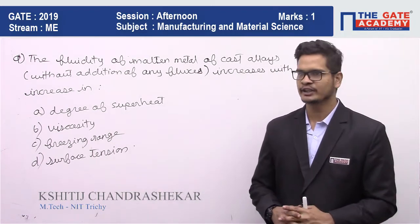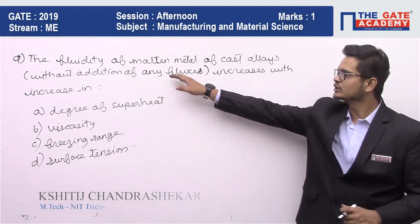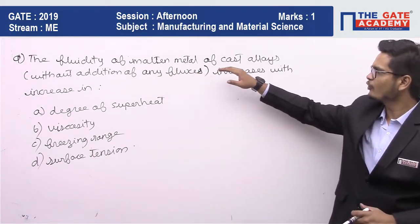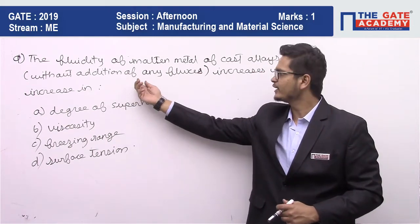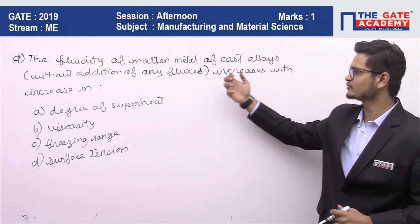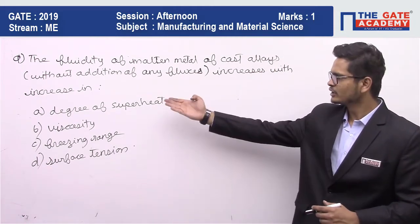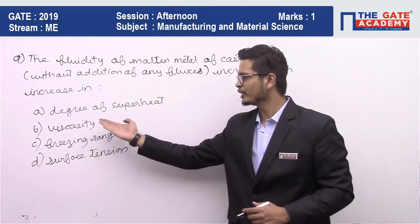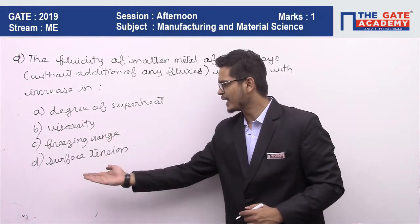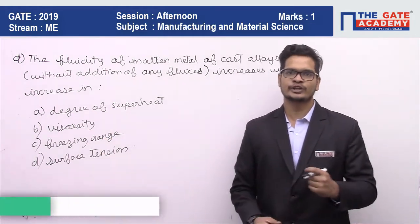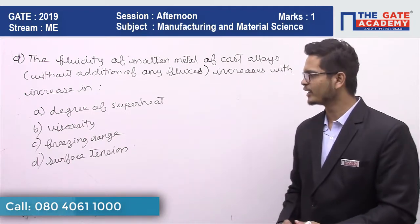The topic is casting. The question is: the fluidity of molten metal of cast alloys without addition of any fluxes increases with increase in — they have given us four options: degree of superheat, viscosity, freezing range, and surface tension. So they are asking us how to improve the fluidity of a molten metal.